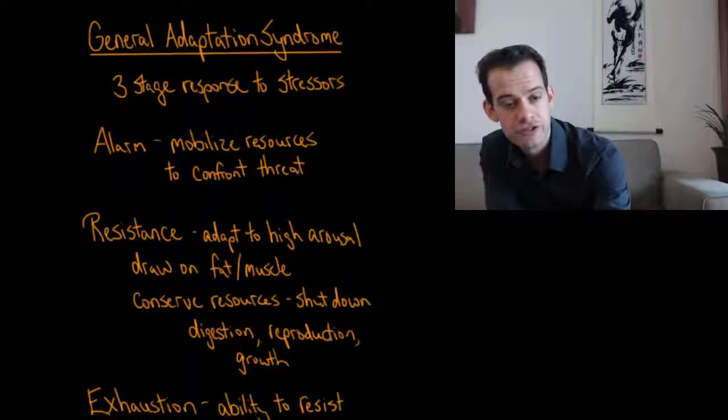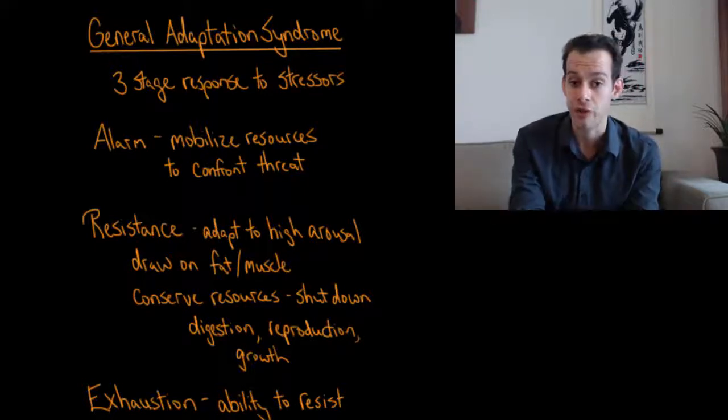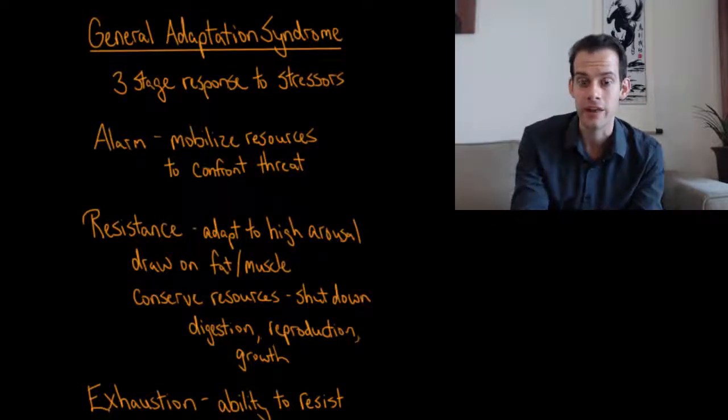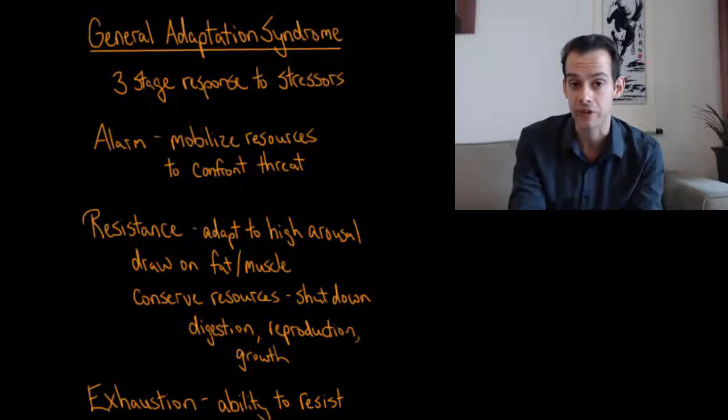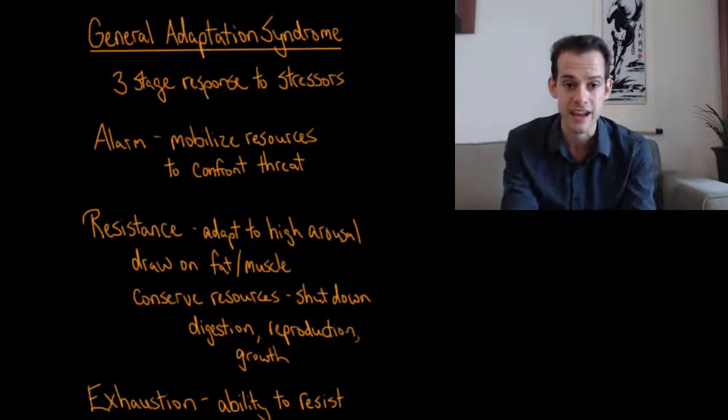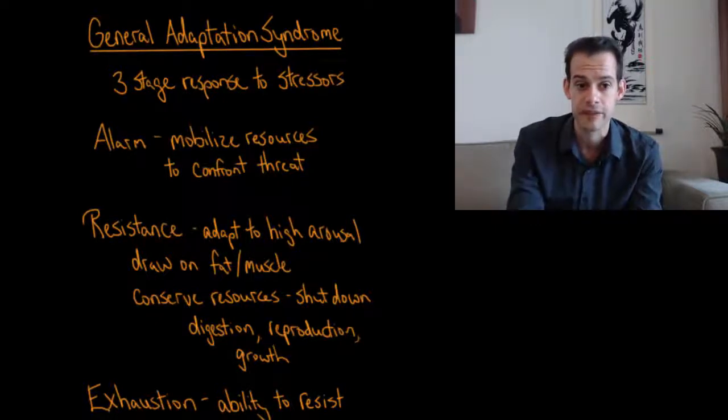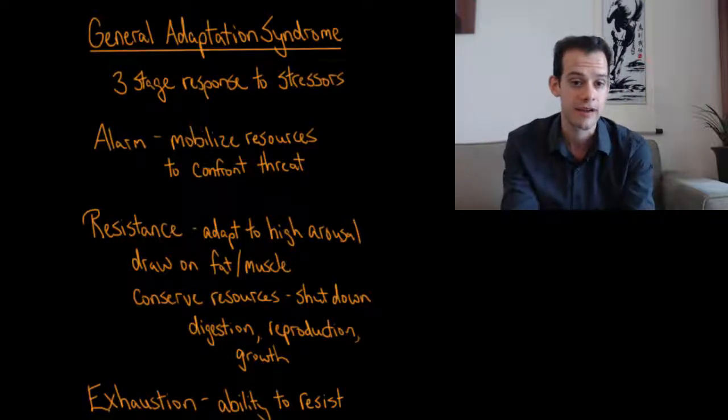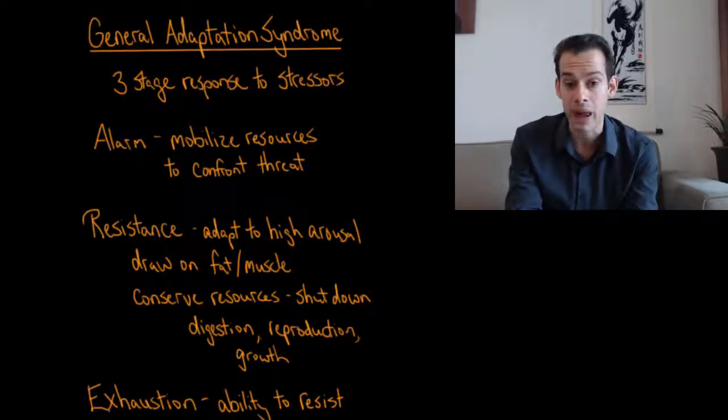And based on this work, Selye proposed general adaptation syndrome. He thought there was a general explanation for what was going on. That this applied to any chronic stressor. And he proposed a three-stage response to stressors. The first stage is alarm. And this is where the organism has to mobilize resources in order to confront whatever the threat is.